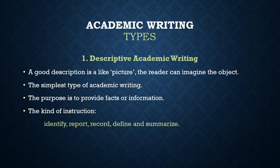The first type of academic writing is descriptive academic writing. The word 'describe' means to explain something in its simplest form so that we can understand it. A good description is like a picture — the reader can imagine the object. Your description should be so easy and simple that the reader starts to imagine the term, and their imagination is strong when reading the description.